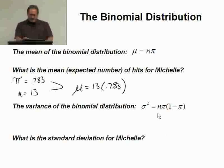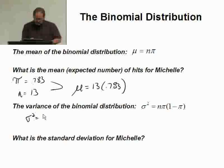See the variance, sigma squared is given as n times pi times 1 minus pi. So, for this case with Michelle and the basketball thing, we say sigma squared equals 13 times pi, which is 0.783, times 1 minus pi, which is 1 minus 0.783.